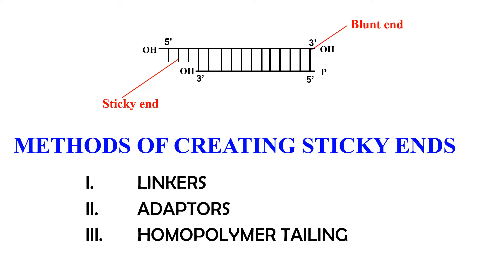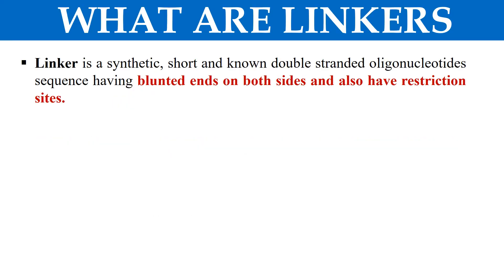In order to combine two DNA molecules, we generally make sticky end DNA molecules. So if a molecule is a blunt end molecule, by making use of linkers, adapters, or homopolymer tailing, we convert the blunt end into sticky ends. How the blunt end is converted into a sticky end will be covered next.